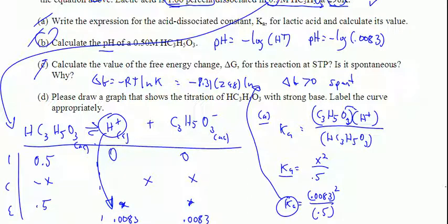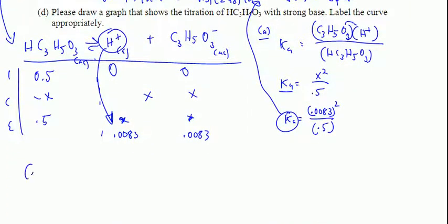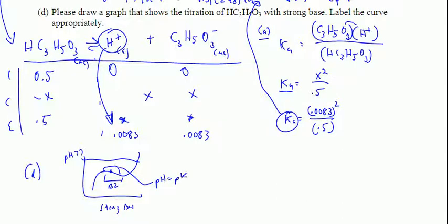Part D: Draw the titration curve. It's a weak monoprotic acid. We have a buffer zone here, and a pH value greater than 7 at equivalence with strong base. pH equals pKa at the buffer zone. Titration of a strong acid looks different with no buffer zone, but that's not what we have here. I'm going to stop right there and move on to the next podcast. Take care, guys.